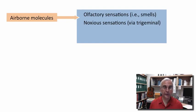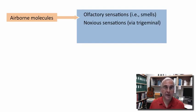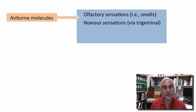Now, some of these molecules can actually produce irritation to tissues in the body. They are potentially damaging, and it makes great sense that we would have a chemical sensory system dedicated to detect these potentially irritant molecules. That's where the third major chemical sensory system comes in — it's called the trigeminal chemosensory system.